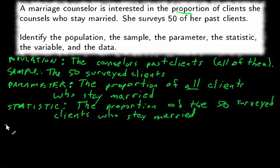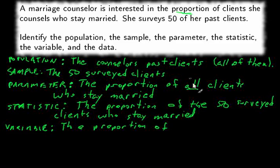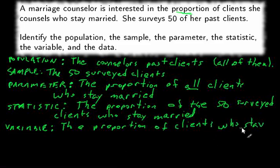The variable is a generalization of the statistic. It's the proportion of clients who stay married from any selection of 50 clients — not just the one that was actually surveyed, but the proportion of clients who stay married from any selection of 50 clients.